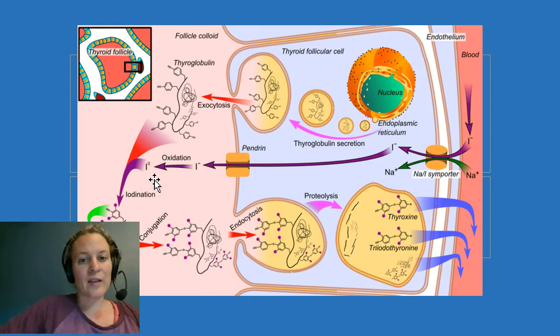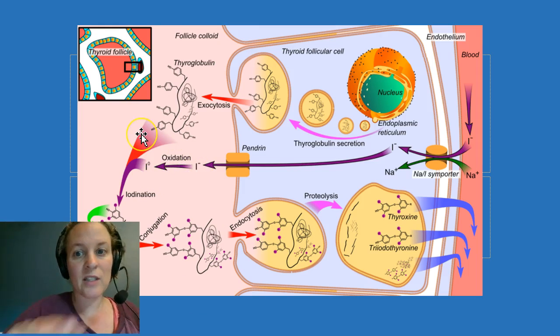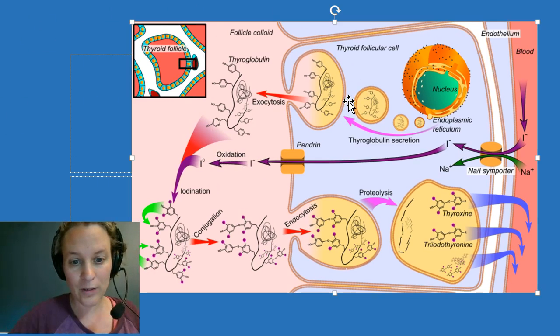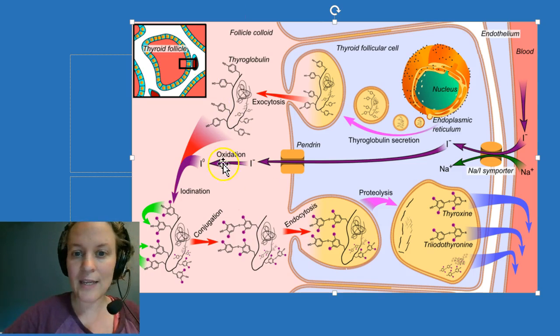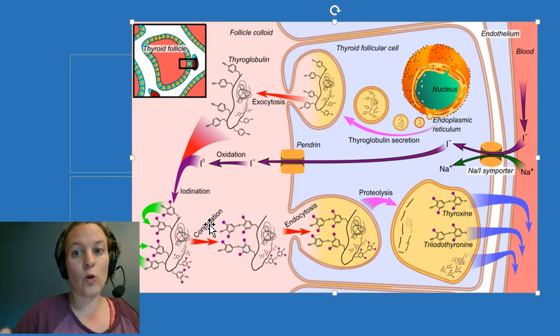So all of this is happening here in the colloid, and all of this thyroid hormone is formed and stored here. And we should have enough, what they call, reserve in the thyroid gland to last up to several months potentially. And this is just hanging out here waiting to be told we need more thyroid hormone in the blood.